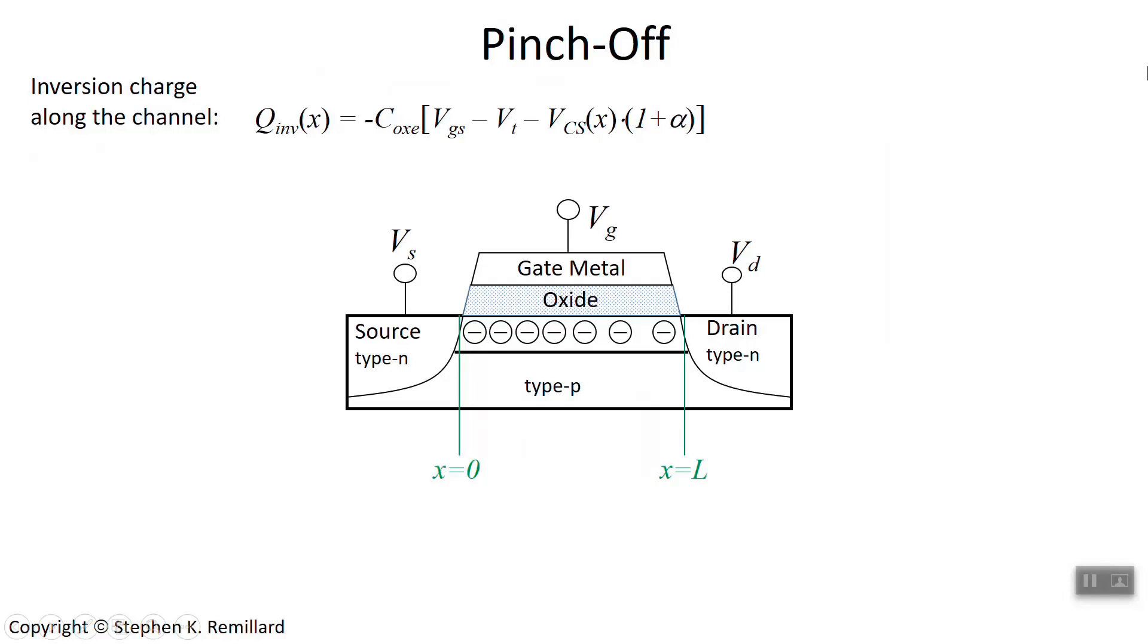Let's take our idea of saturation with the current and look at the pinch-off that can happen. Pinch-off is a situation where you end up with no mobile charge carriers near the drain. We have this expression for the inversion charge, coulombs per square meter in the inversion layer, and it has an x-dependence to it, which depends on the x-dependence of the channel voltage. That's the voltage between the channel and the source.